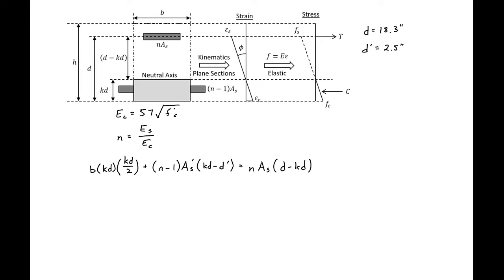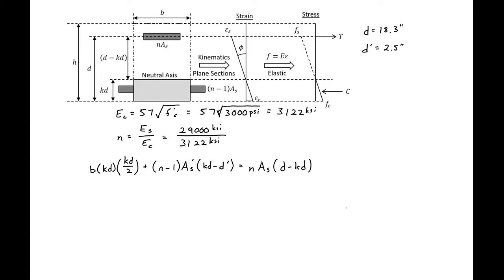Next we need to find the cracked transformed moment of inertia. To do that, we first find the depth of our neutral axis, kd. We calculate Ec = 57,000 times the square root of f'c divided by 1,000 pounds per kip = 57,000 times √3,000 psi = 3,122 ksi. The modular ratio n = 29,000 ksi divided by 3,122 ksi = 9.3.